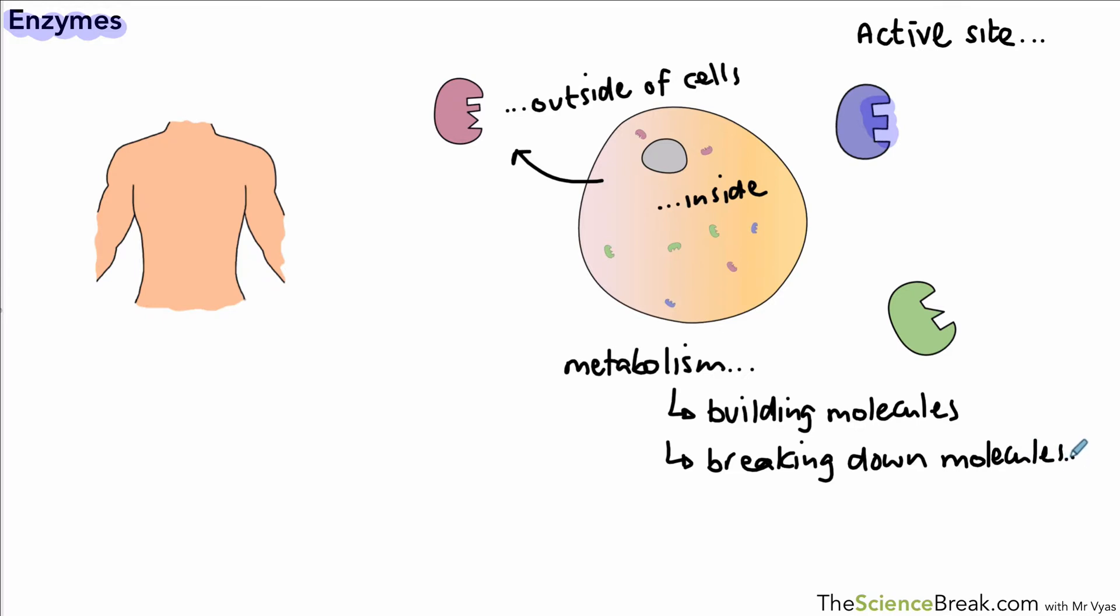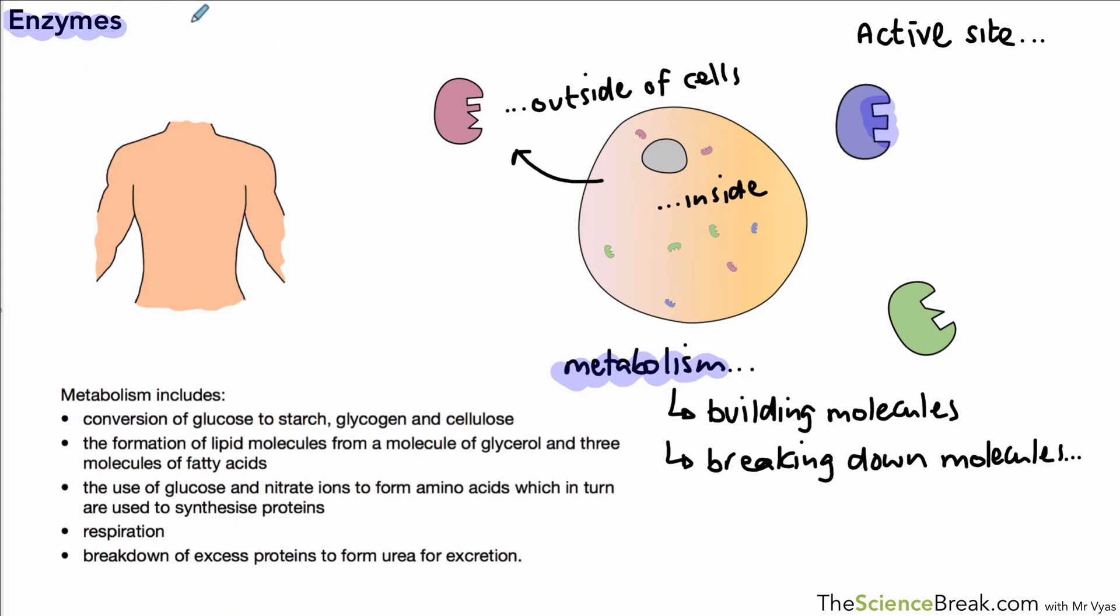The kinds of reactions we're talking about include conversion of glucose to starch, the making of lipid molecules, making proteins, respiration, and breaking down of proteins as well. We've got six different types of reaction included in our metabolism.